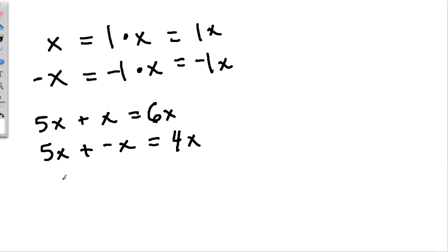And we can use our rules of integers. If we have 5x minus x, well, take 1x from 5x, that's 4x. And sometimes you might see something a little bit more confusing, like 5x minus negative x. Well, remember that subtracting a negative is adding a positive, so this is 6x.